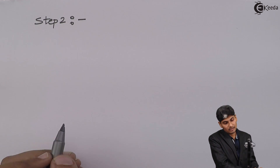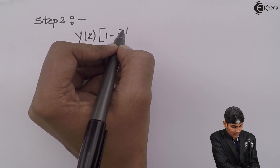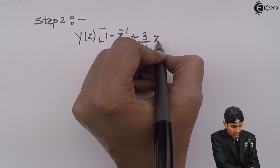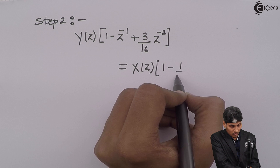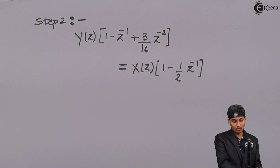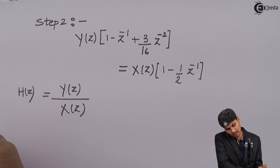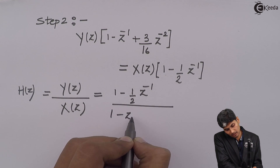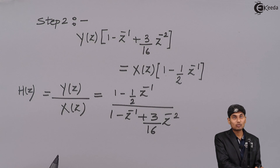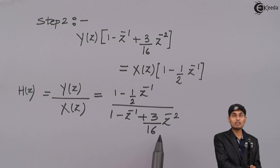Step 2: taking common Y(z)'s and X(z)'s. We have Y(z)[1 - z⁻¹ + (3/16)z⁻²] = X(z)[1 - (1/2)z⁻¹]. Therefore the transfer function H(z) = Y(z)/X(z) has numerator polynomial (1 - (1/2)z⁻¹) and denominator polynomial (1 - z⁻¹ + (3/16)z⁻²).